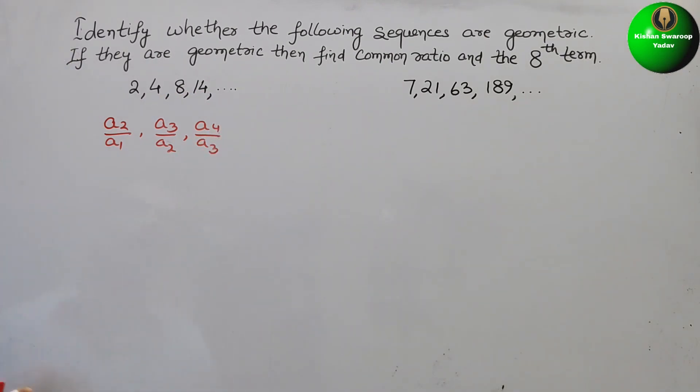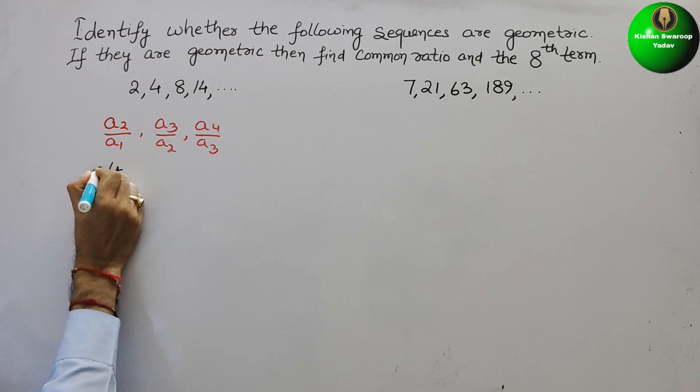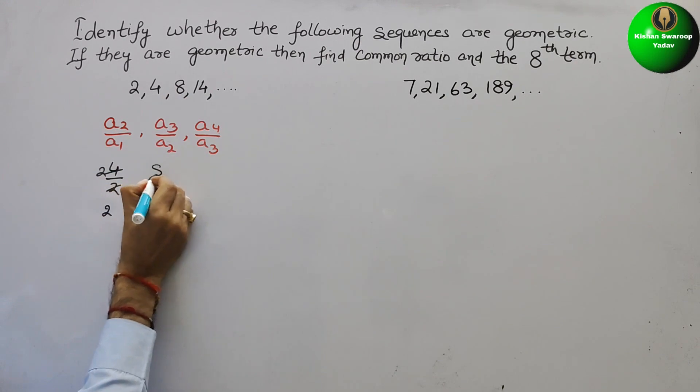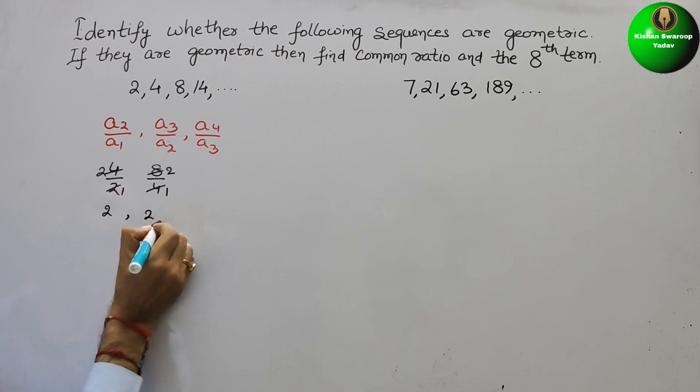First, we have to do it here. So now it will be 4 by 2. If you reduce it, it will be 2 here. Therefore, we will get 2. Next, 8 by 4. If you reduce by 4, again you will get 2 here.